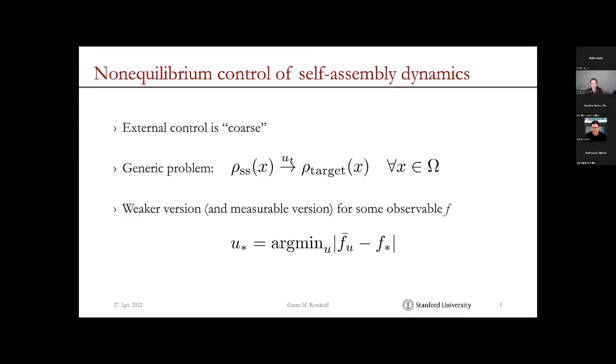The generic problem could be formulated as follows: I have some steady state distribution that I start in, and I want to find a control protocol u* of t that is going to map my distribution to a target distribution for every point in my domain. That problem is a relatively well-studied type of problem—it's an optimal transport problem—but it requires a lot of flexibility.